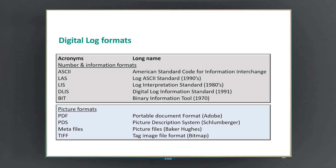The digital log formats used in the industry at the moment are LAS files, DLIS files, and LIS. LIS is a very old type of log format, while LAS is the newer one currently being used. DLIS is still being used, and LIS is almost obsolete. In picture formats, everybody uses PDF to send scanned images. Schlumberger has their own format, and Baker Hughes uses Meta files. TIF files are also in operation at the moment.